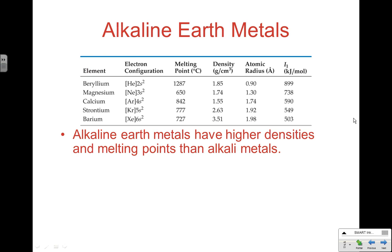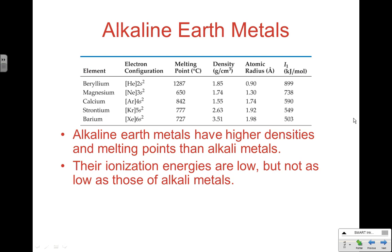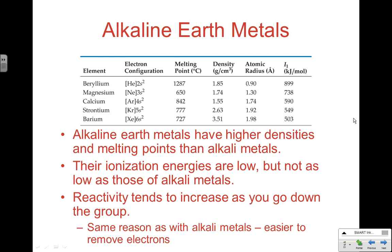The alkaline earth metals are the second column of the periodic table — a longer name than just 'alkali.' They have higher densities and melting points than alkali metals, so they must be held together more strongly through metallic bonding. They're not quite as reactive because their ionization energies are low but not as low as the alkali metals. As you go down the group, reactivity still increases because ionization energy decreases, making it easier to remove electrons.